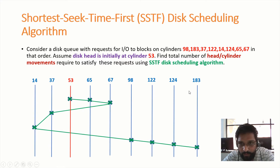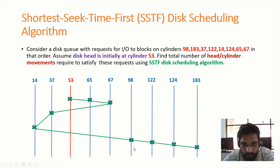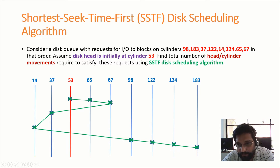To identify the total head movements, we subtract: 65 minus 53, 67 minus 65, 67 minus 37, 37 minus 14, 98 minus 14, 122 minus 98, 124 minus 122, and 183 minus 124. Once we do that, the total number of head movements is 238.